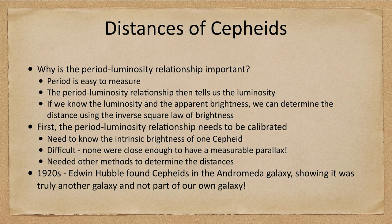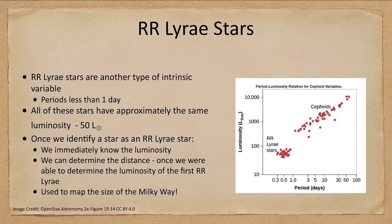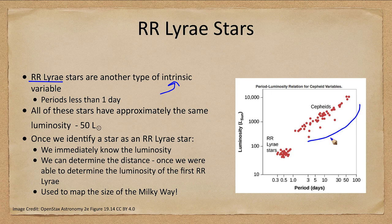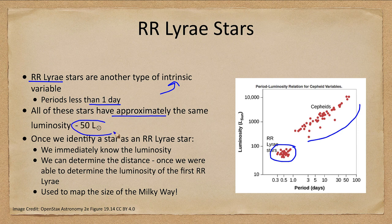Now another type of star similar to the Cepheids are the RR Lyrae stars. These are another type of intrinsic variable — stars that are pulsating and varying. The Cepheids have longer periods, while RR Lyrae stars all have periods of less than one day, and they all have approximately the same luminosity, about 50 times the luminosity of the sun. That's great, because if you identify a star as an RR Lyrae star, you know the luminosity. If you know the luminosity and you measure the apparent magnitude, you can get the distance.